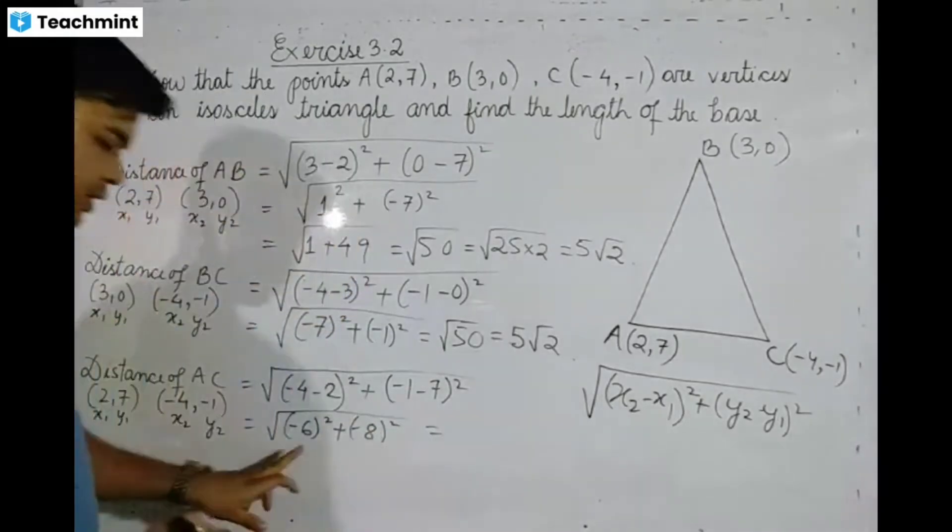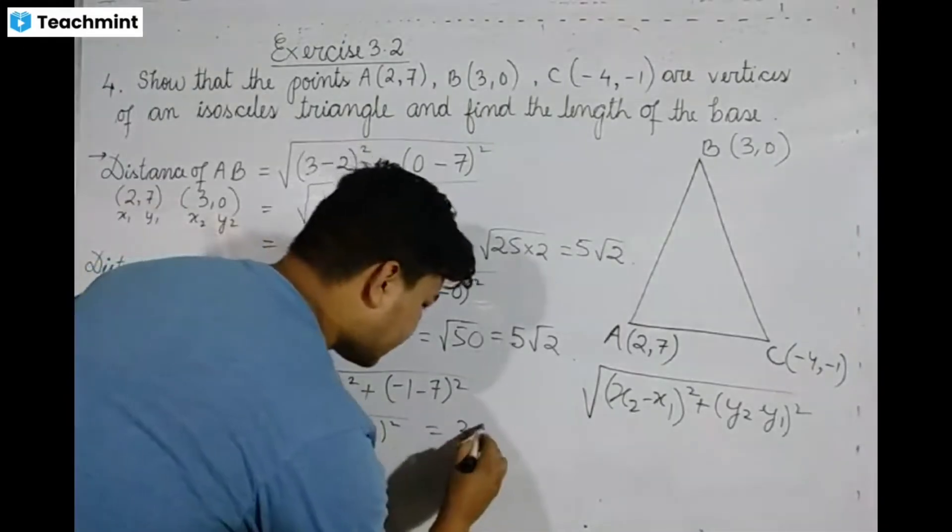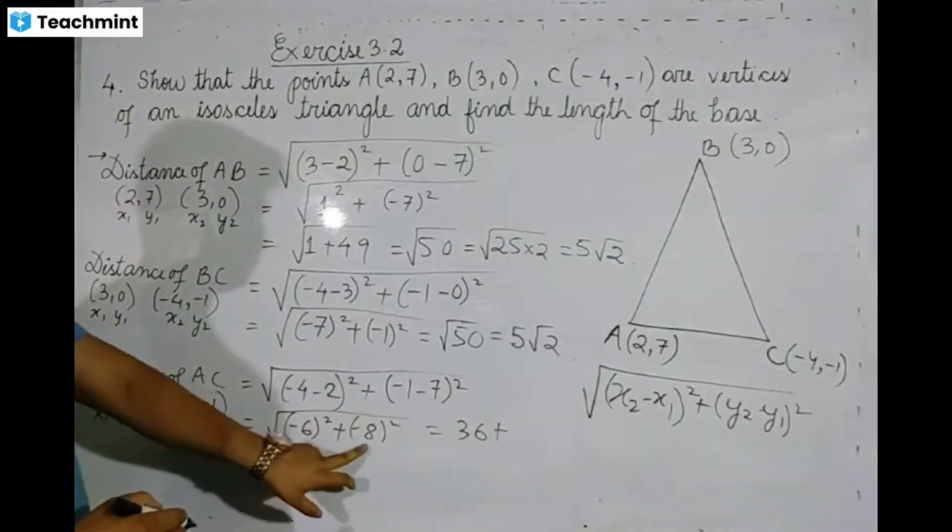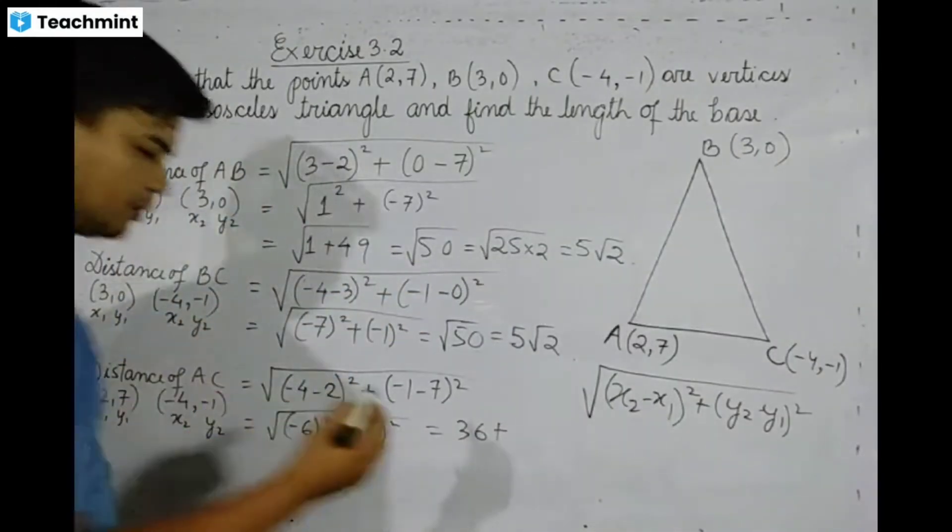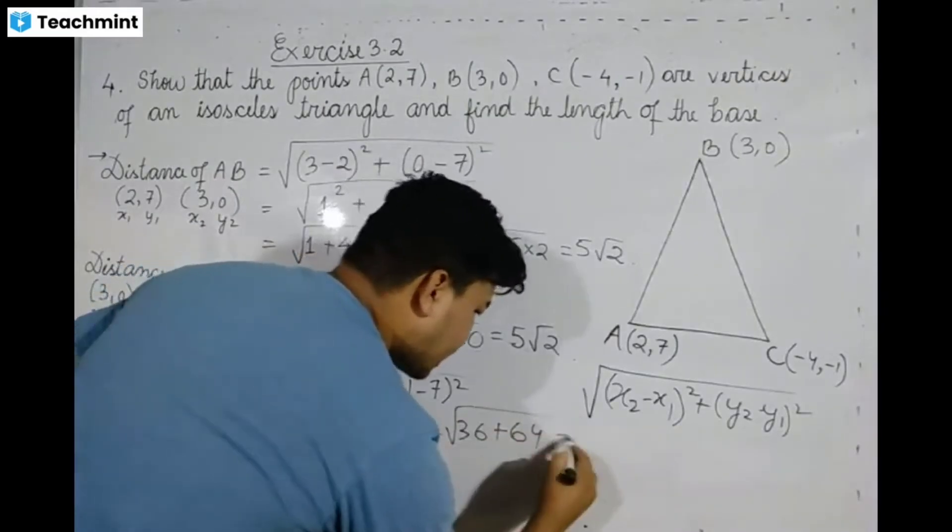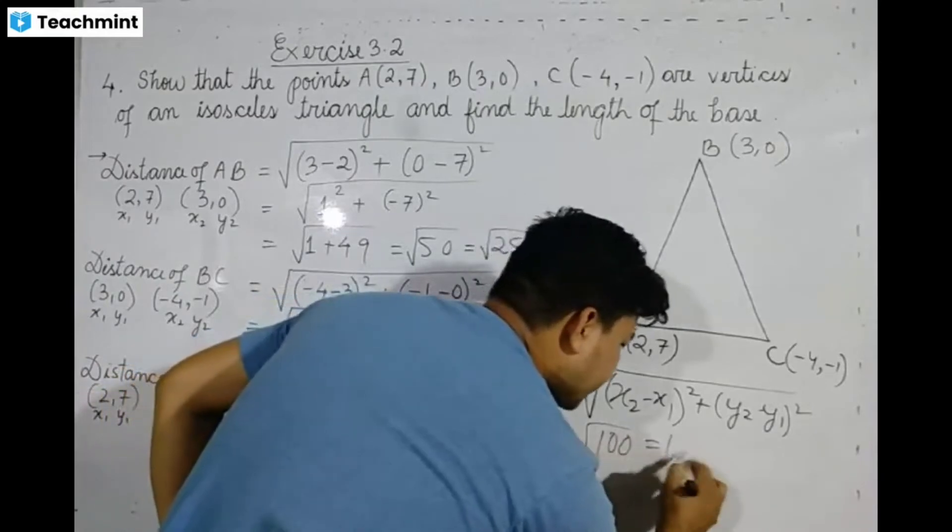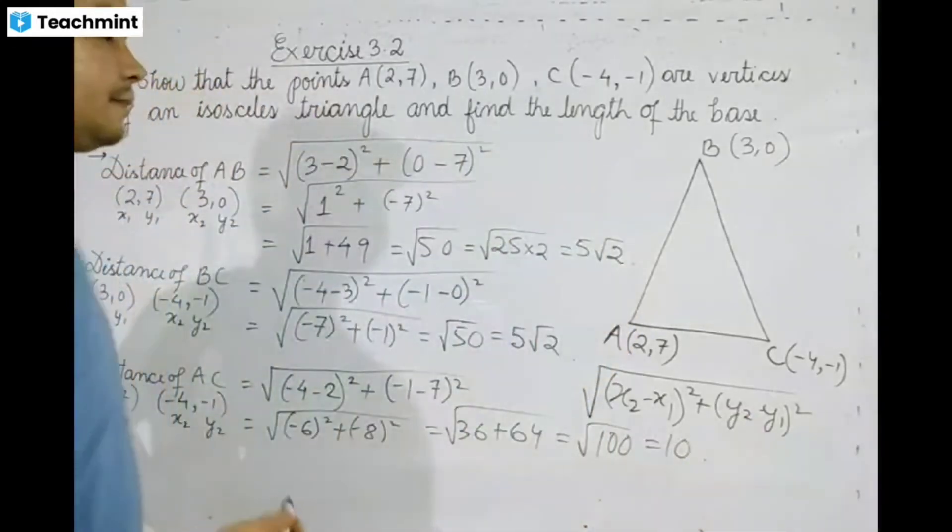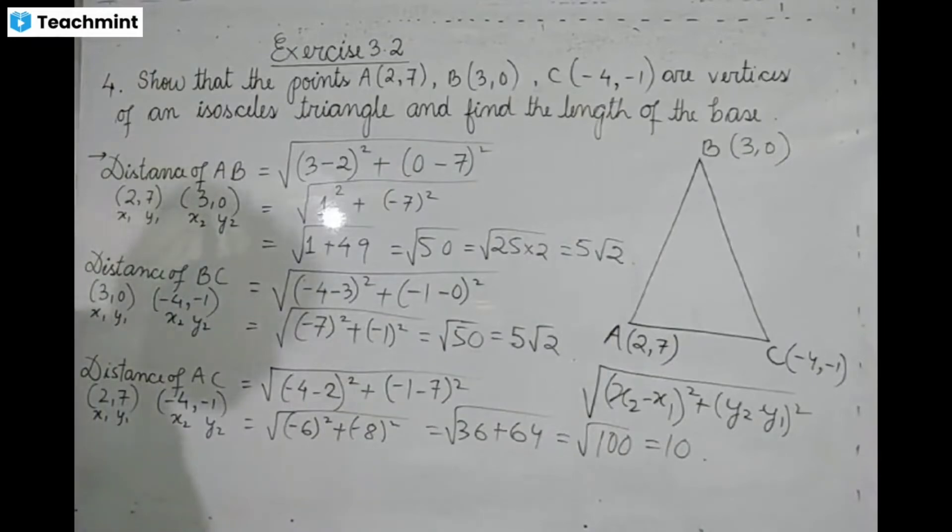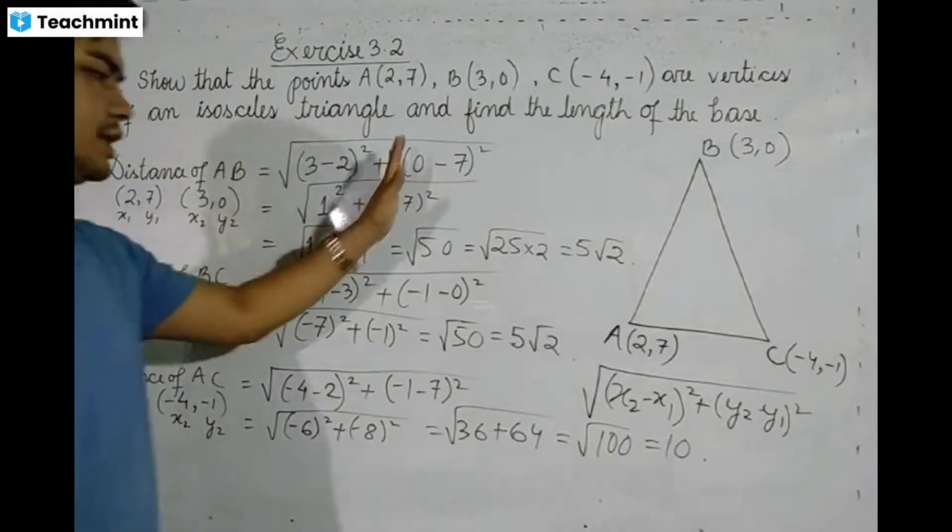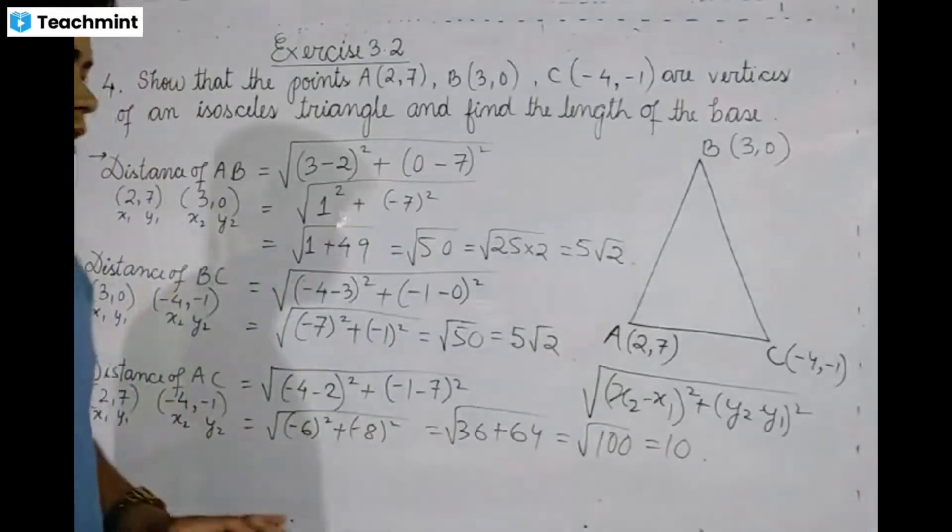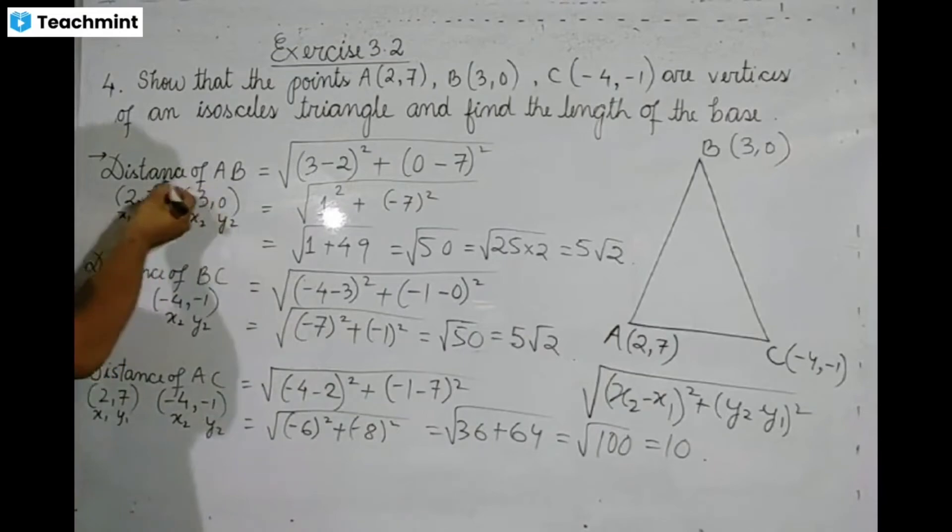36 plus 64 equals 100, so square root of 100 equals 10. So the distance of AB is 5√2.